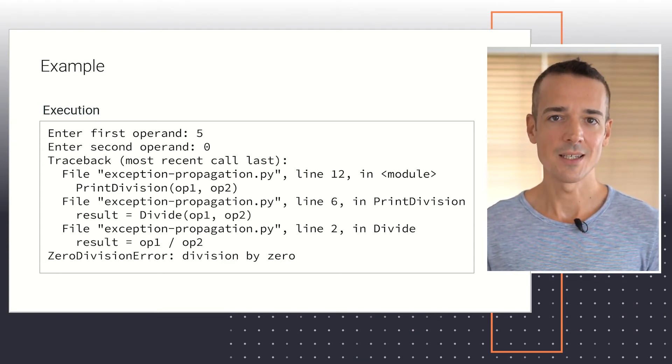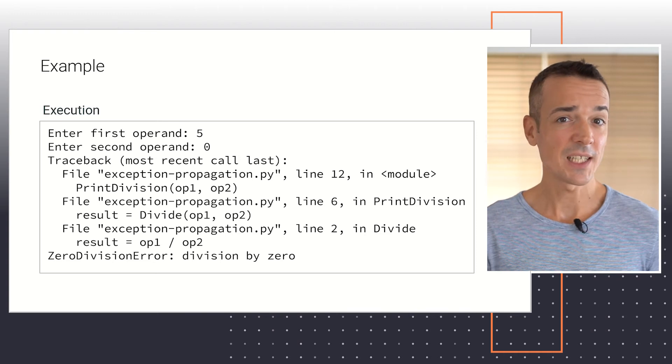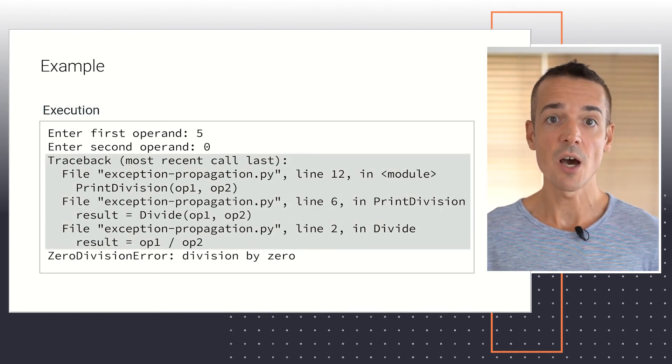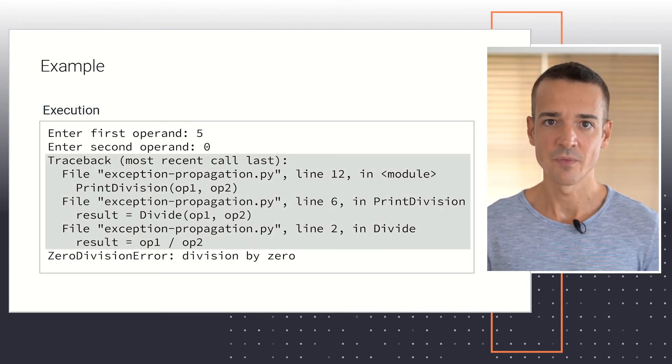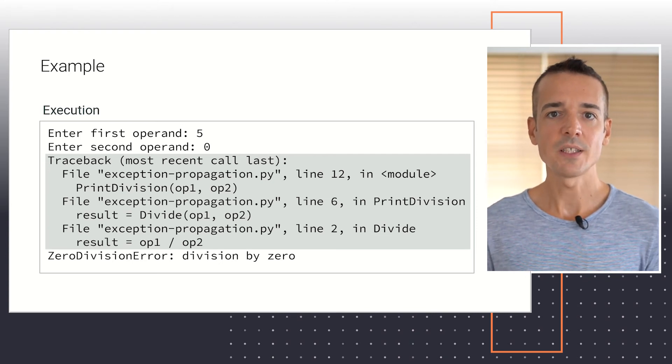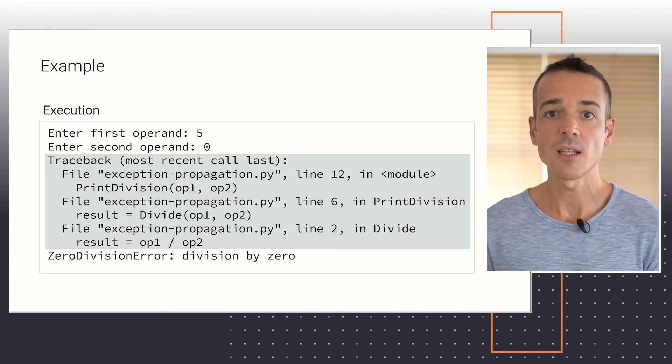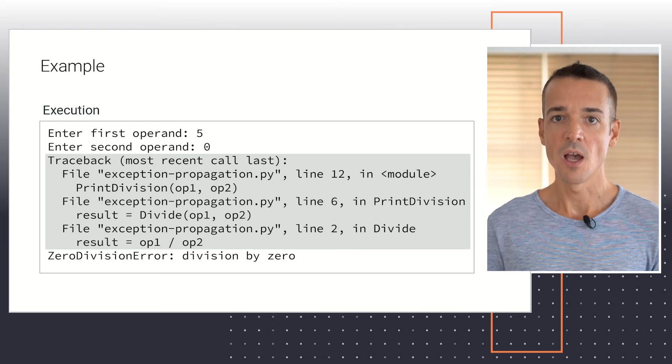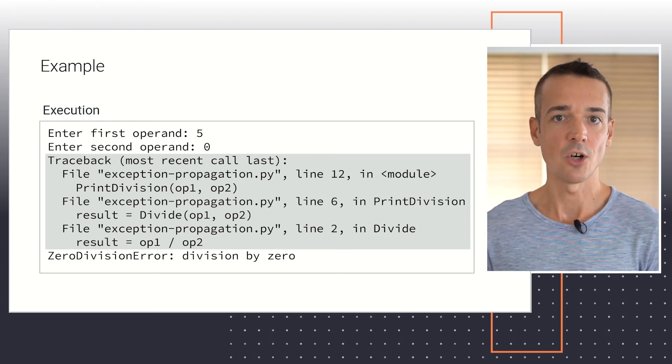Let's take a moment to analyze this error message. Specifically, let's pay attention to the top traceback section. Here you can see a detailed description of the sequence of function calls that led to the line of code raising the exception according to the current state of the call tree.